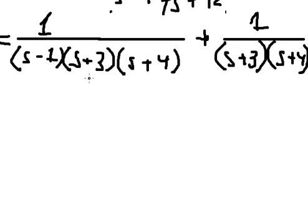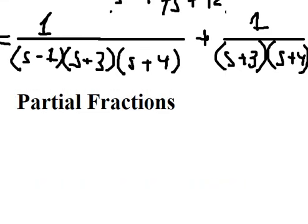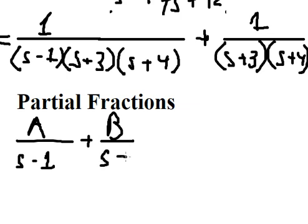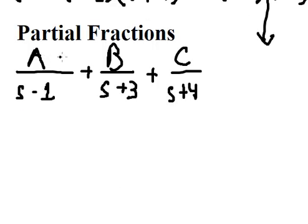Now we apply partial fractions decomposition. We write the expression as A over (s minus 1), plus B over (s plus 3), plus C over (s plus 4). You can work through the common denominator step yourself — combining over the common denominator gives the numerator equation we need to solve.